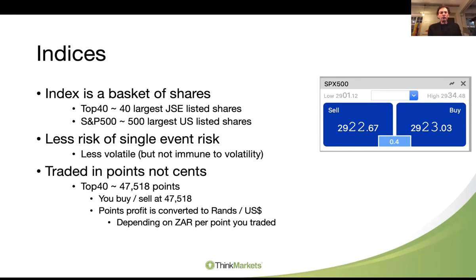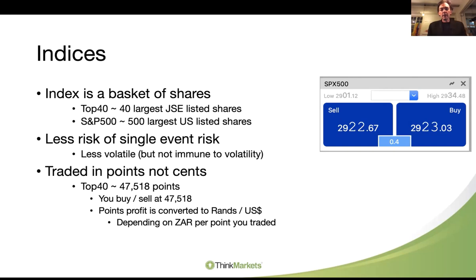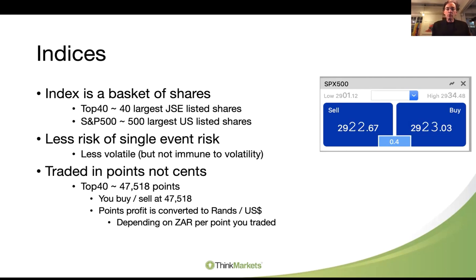What's very important with an index is they trade in points, not cents. So whereas with a share or a commodity you're paying rands and cents, in an index you buy or sell points. The Top 40 index might be at 47,518 points. You'll buy or sell at 47,518, and then you will make a profit per point that it moves. That profit will be set by the platform - you're going to make X per point. If you've gone short and it falls, you make a profit per point that it falls; if you go long and it rises, a profit per point that it rises.